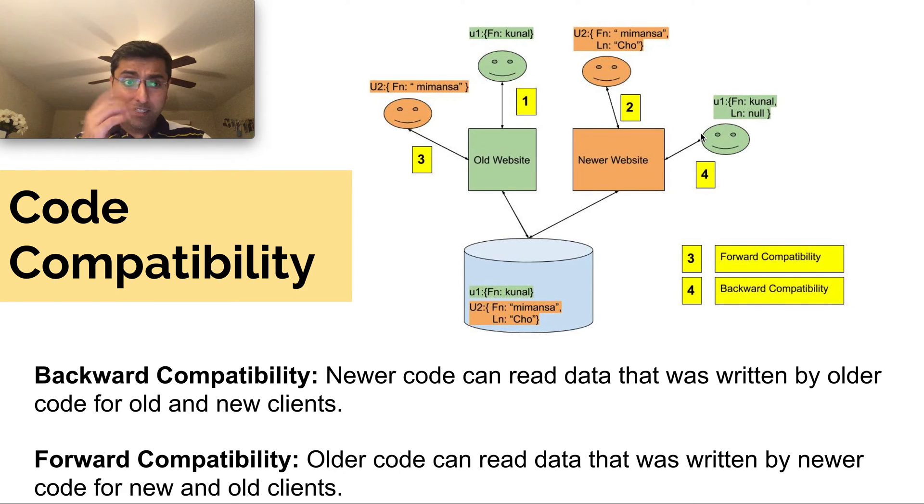So backward compatibility in short is that the newer code bases can read data that was written by the older code bases and still work for both the old and the new client. Of course it'll work for the new client because it's a new code base, but it should also work for the old. That's backward compatibility.